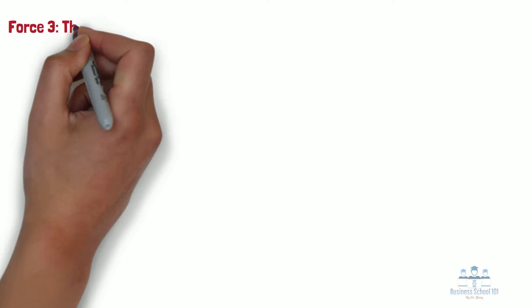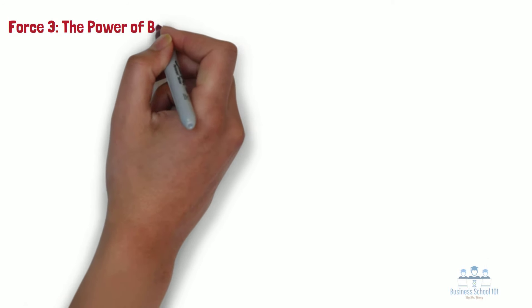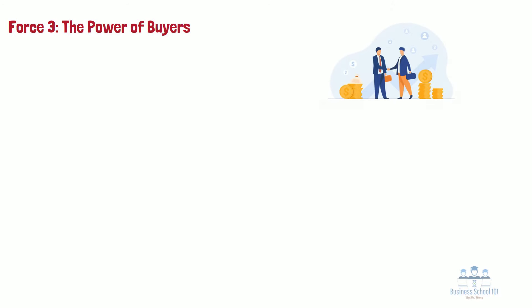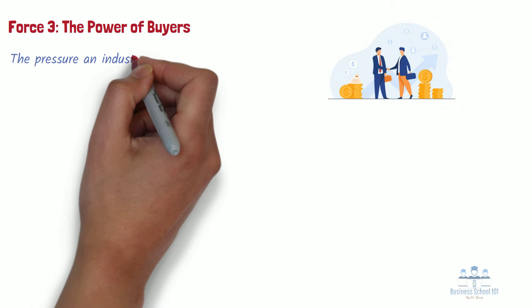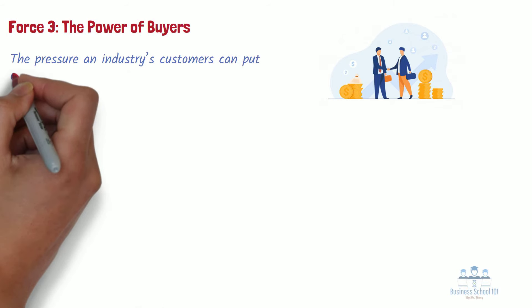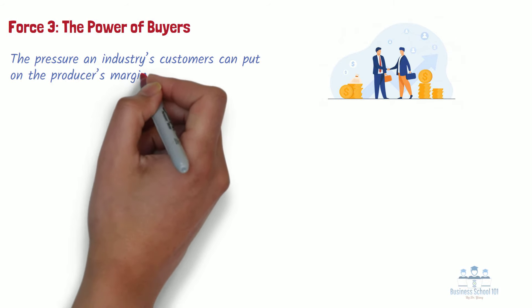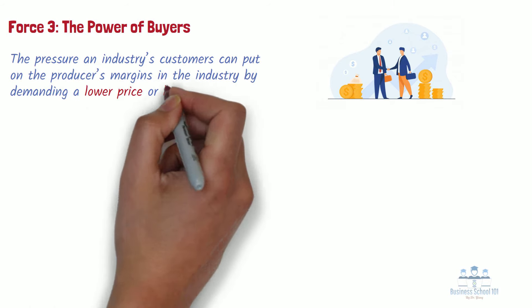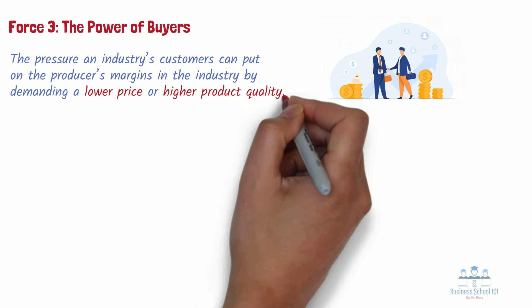Force 3: The power of buyers. The bargaining power of buyers is the flip side of the bargaining power of suppliers. Buyers are the customers of an industry. The power of buyers concerns the pressure an industry's customers can put on the producers' margins in the industry by demanding a lower price or higher product quality.